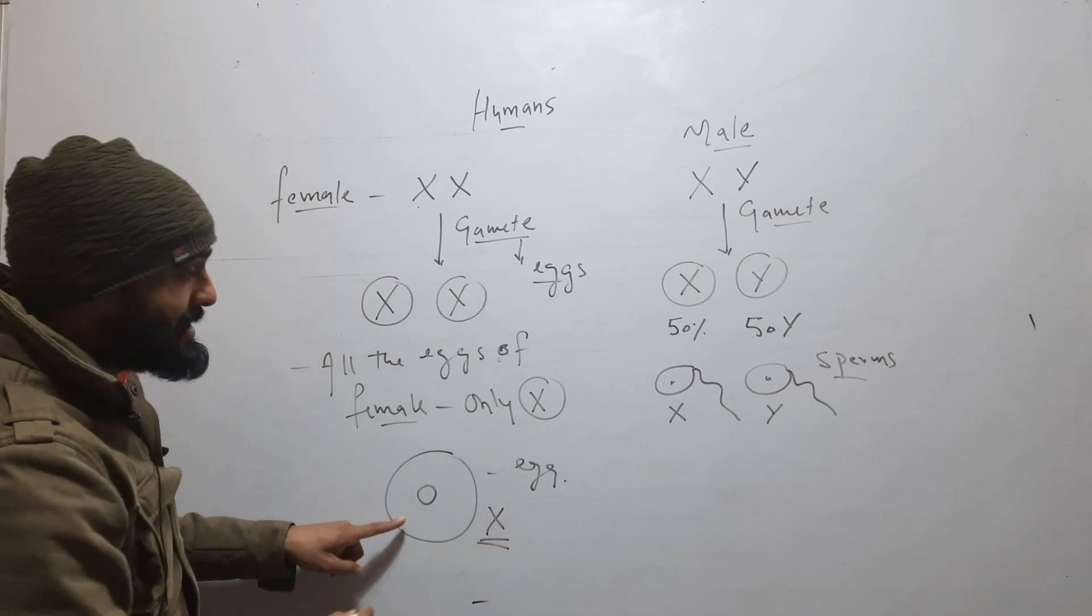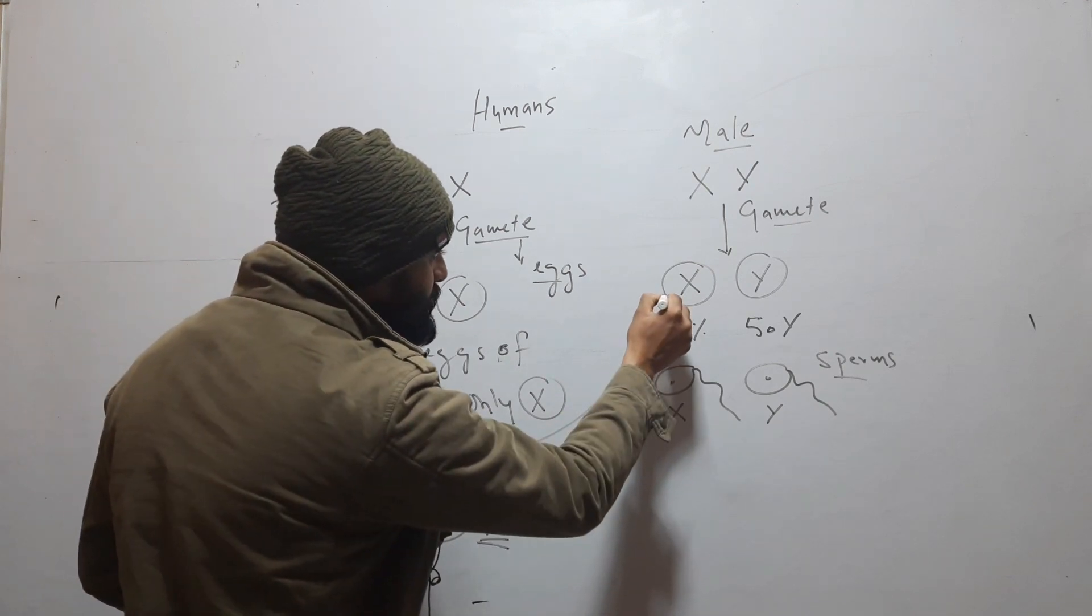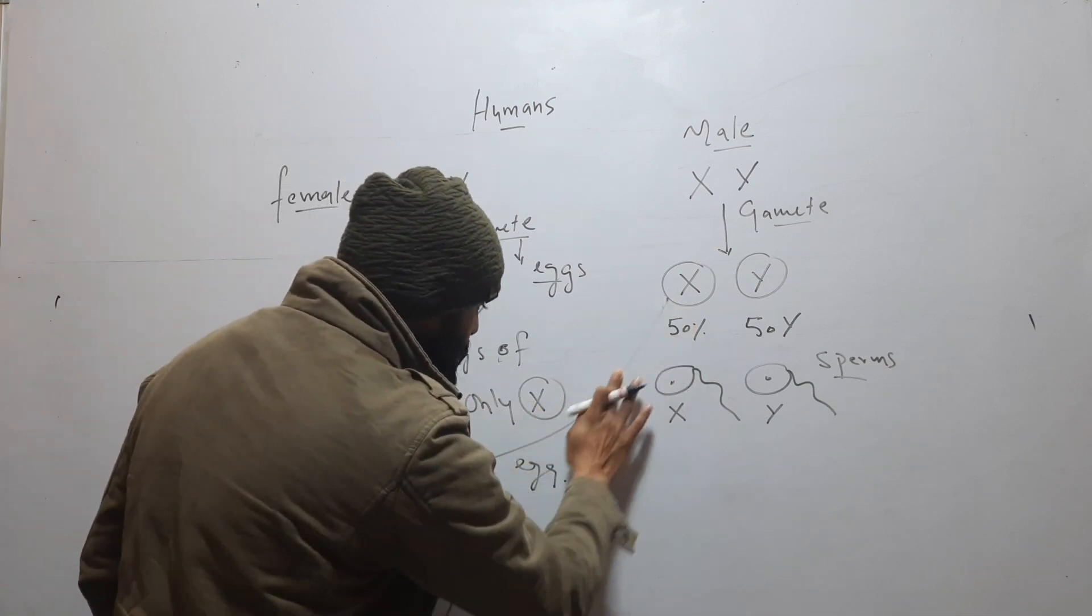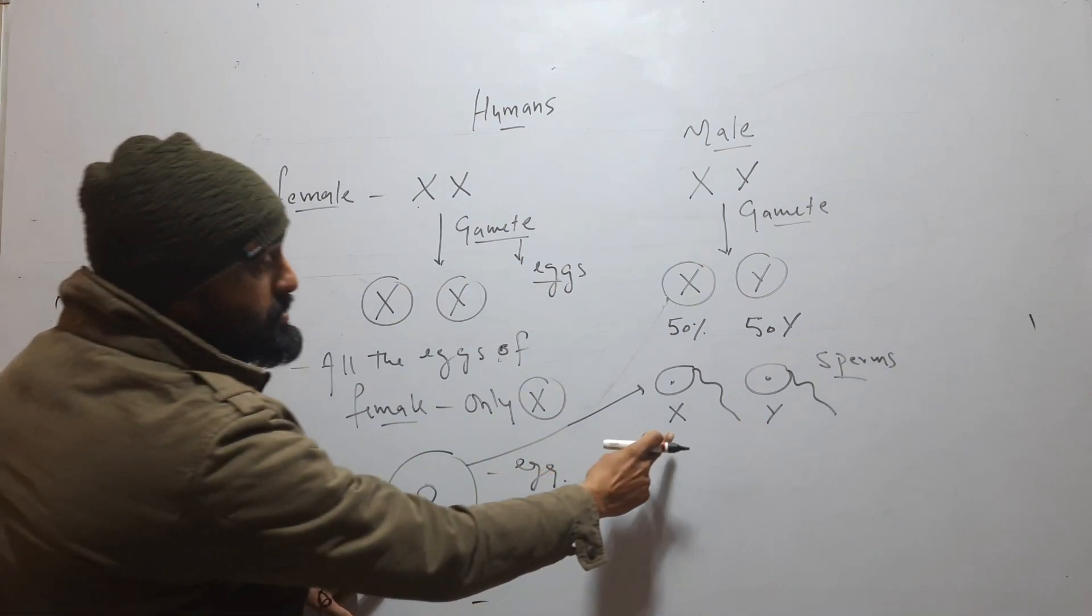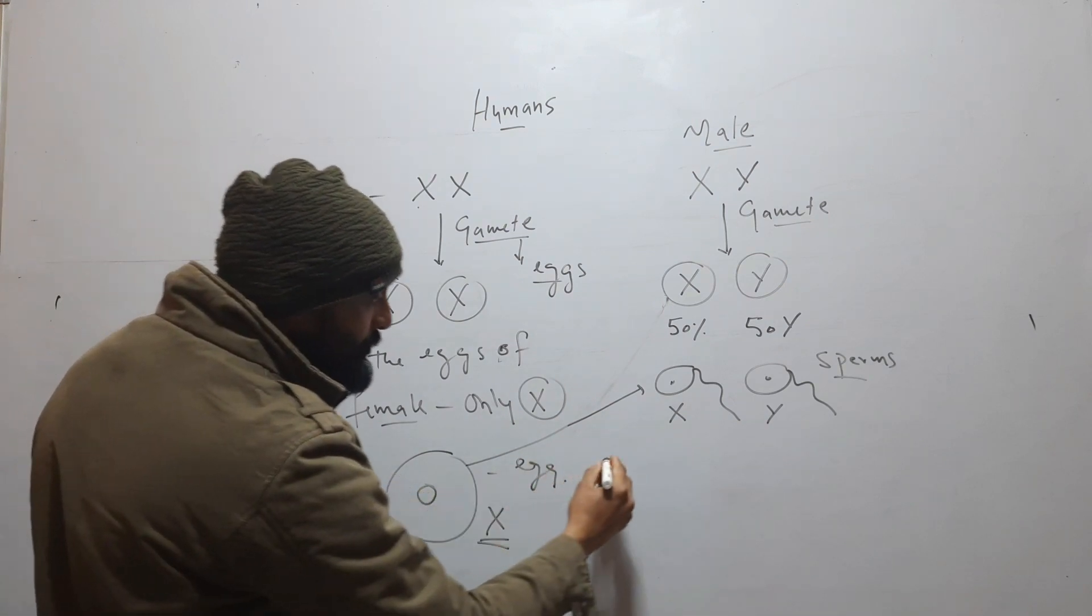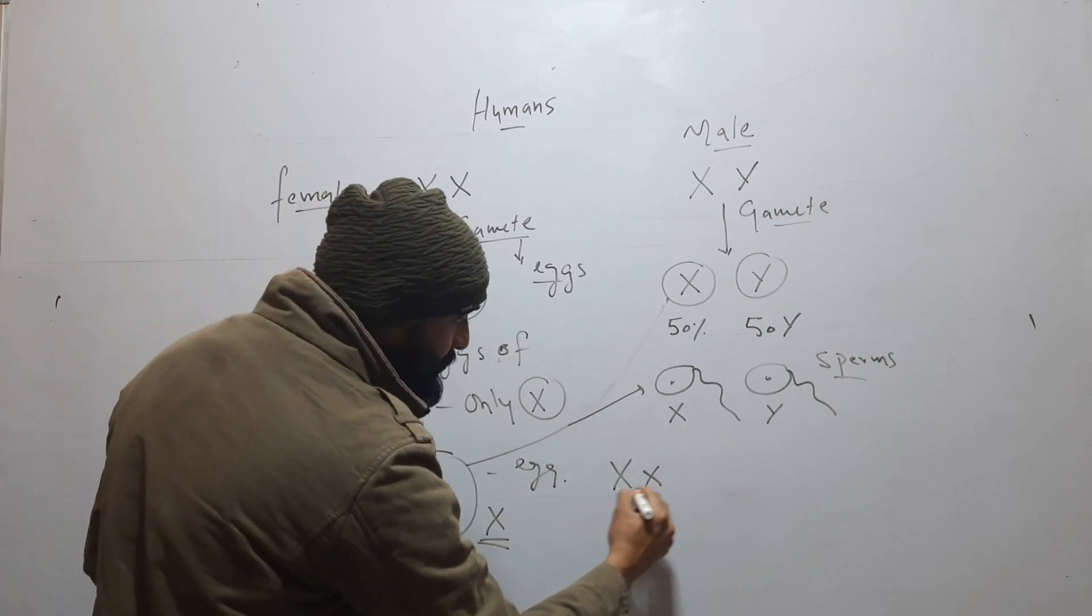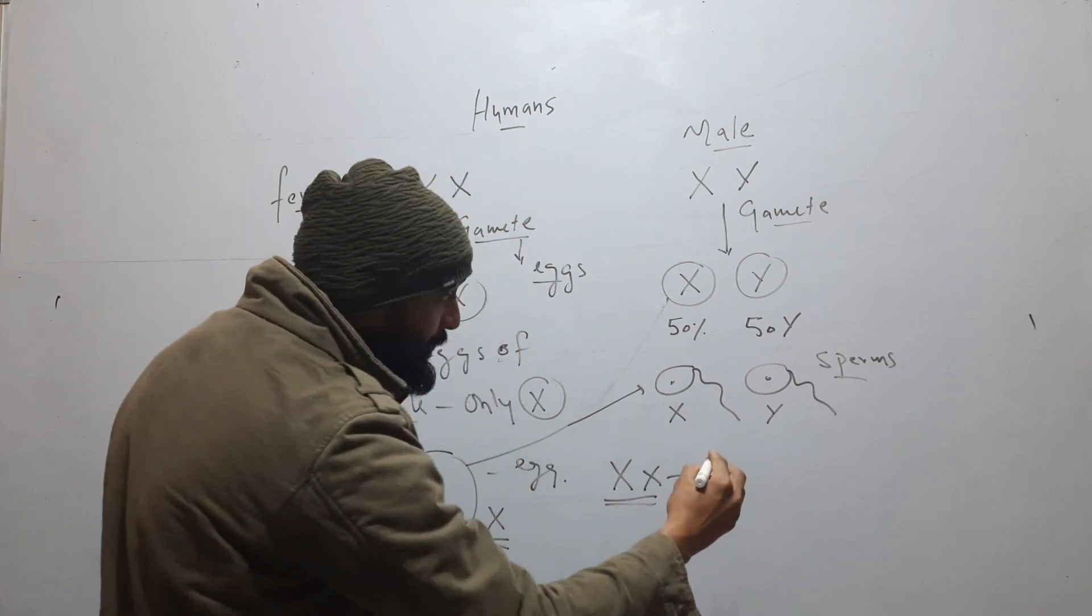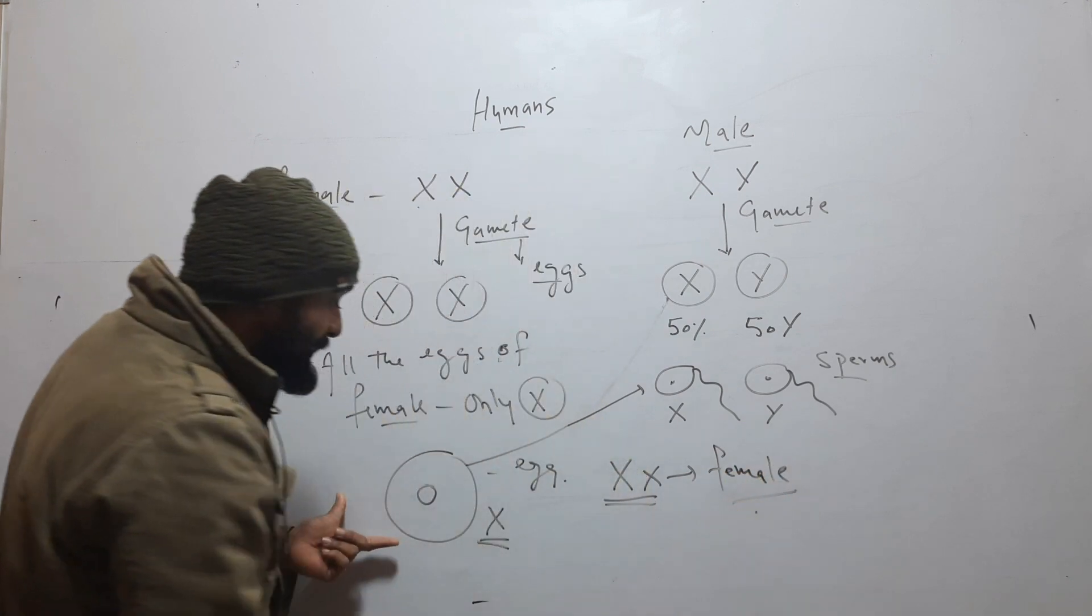So when this egg fuses with this sperm, this egg has X and this sperm has X, then the baby will be female. But when this egg fuses with this sperm that has Y...